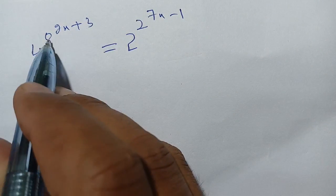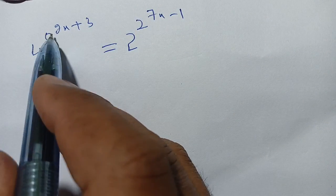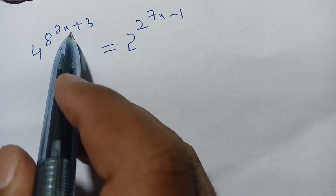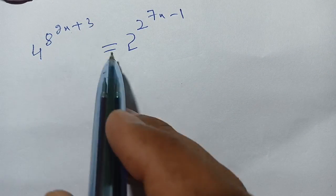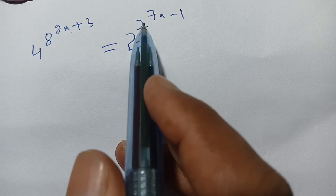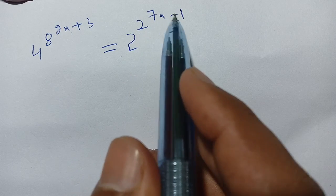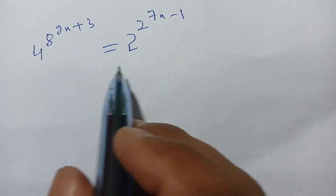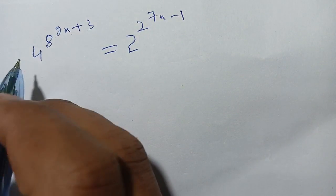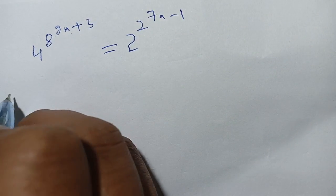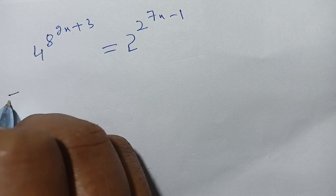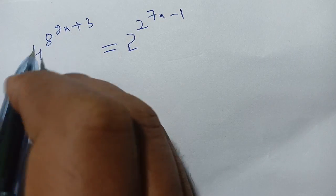How to solve: 4^(8^(2x+3)) is equal to 2^(2^(7x-1)). This is an exponential problem. Let us solve this.